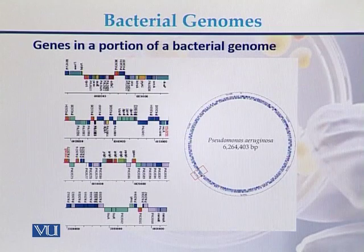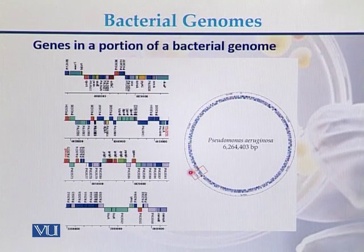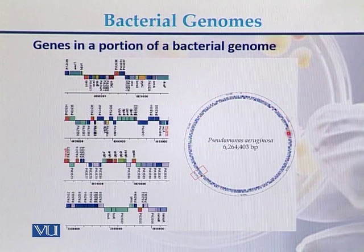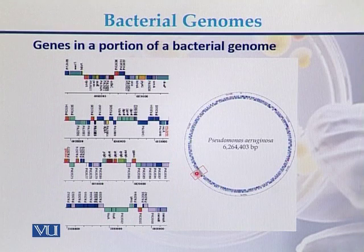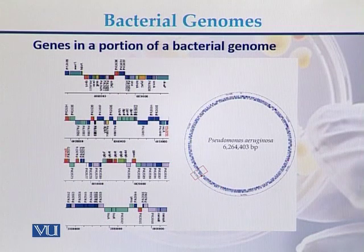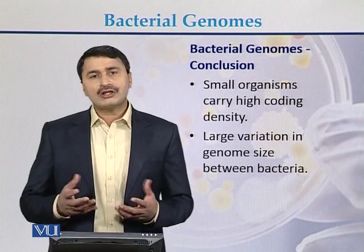This is a pictorial view of one bacterial genome. Here we can see a small portion of the circular DNA genome of Pseudomonas. In this small portion, we can see that all these genes are located very closely together, illustrating that in prokaryotes, most of the genome is coding.